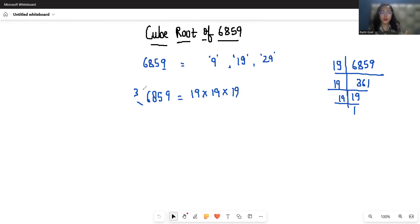To find the cube root, take cube root on both sides. So cube root of 6859 is cube root of 19 to the power 3. Using the rule n-th root of a equals a to the power 1 by n, we get 19 to the power 3 by 3, which is 19. So cube root of 6859 is 19.